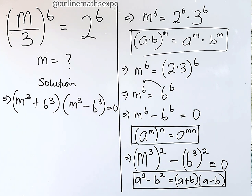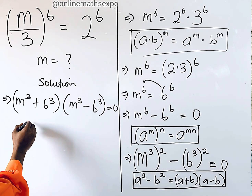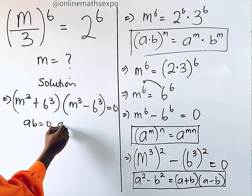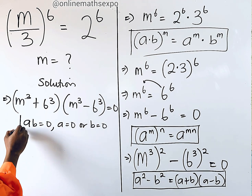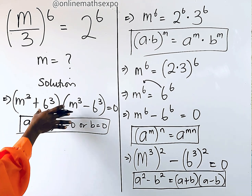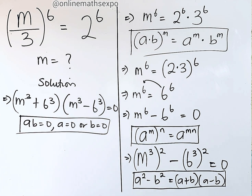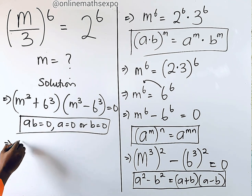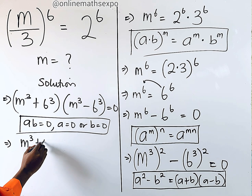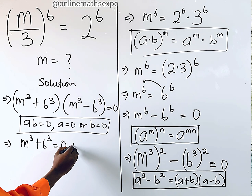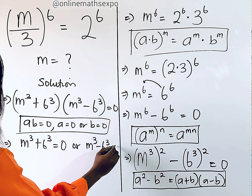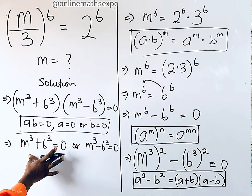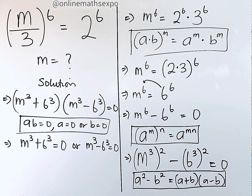Applying the difference of two squares, we get (m^3 + 6^3)(m^3 - 6^3) = 0. Remember, when a product ab = 0, either a = 0 or b = 0. So this means either m^3 + 6^3 = 0 or m^3 - 6^3 = 0. We'll solve each equation in turn.